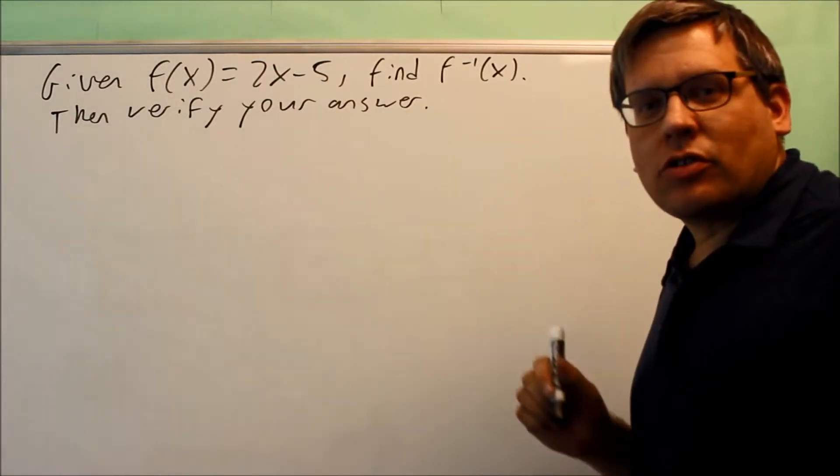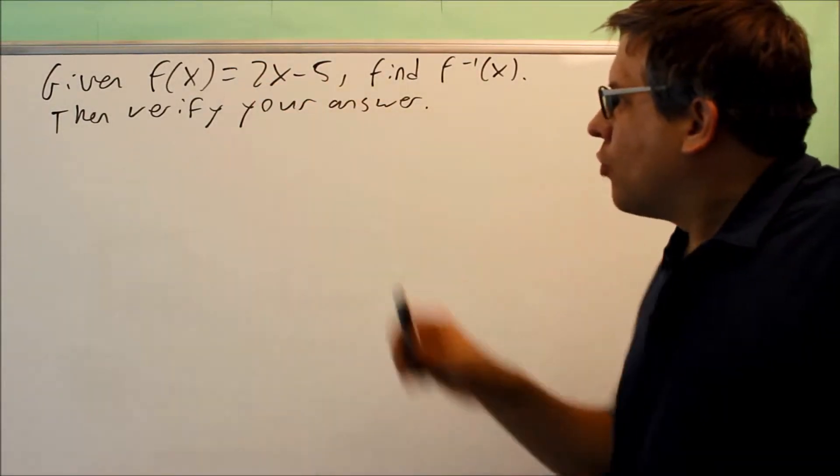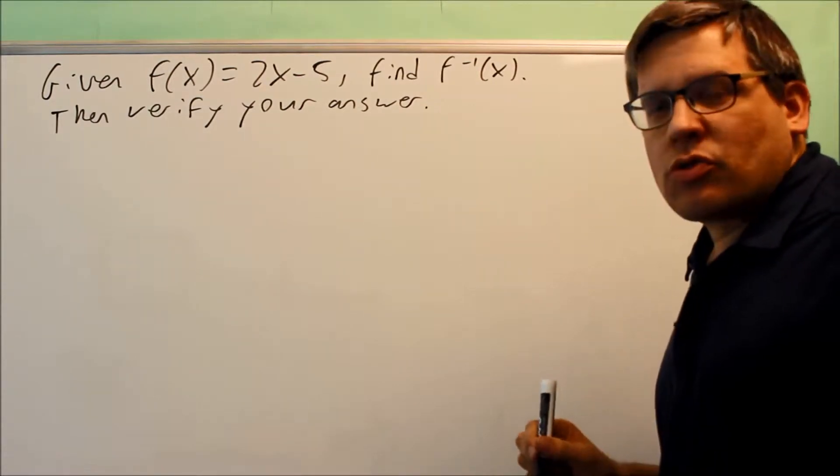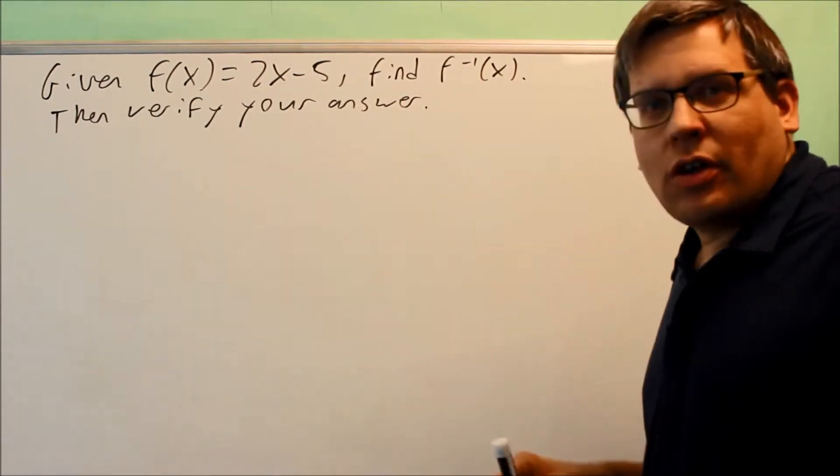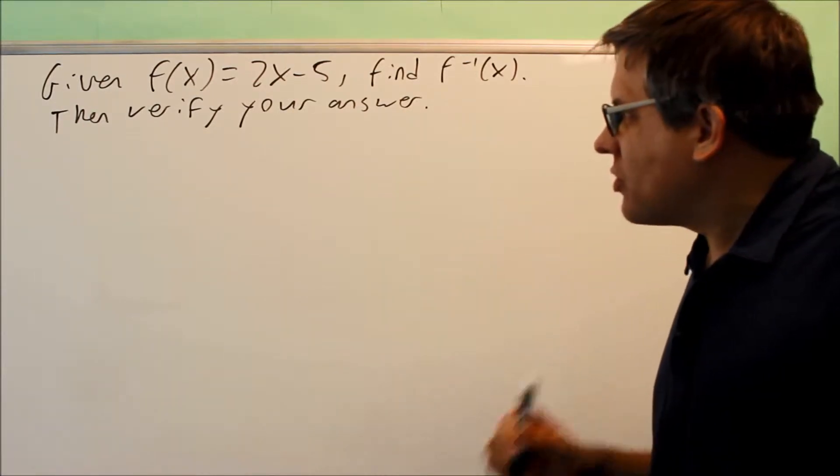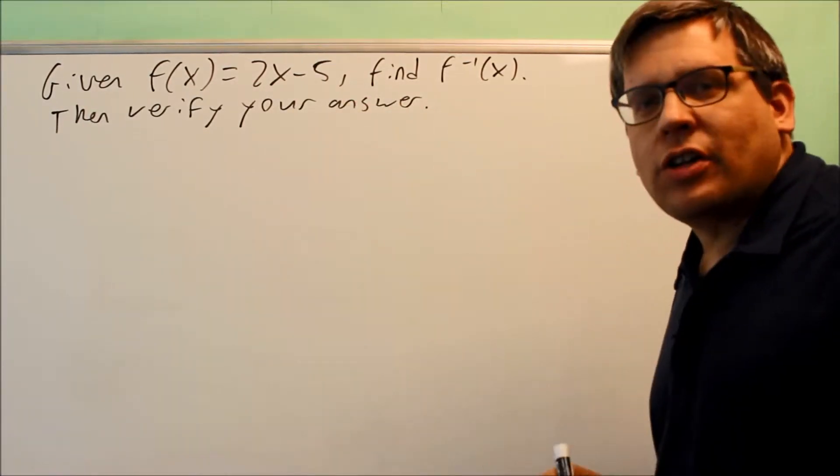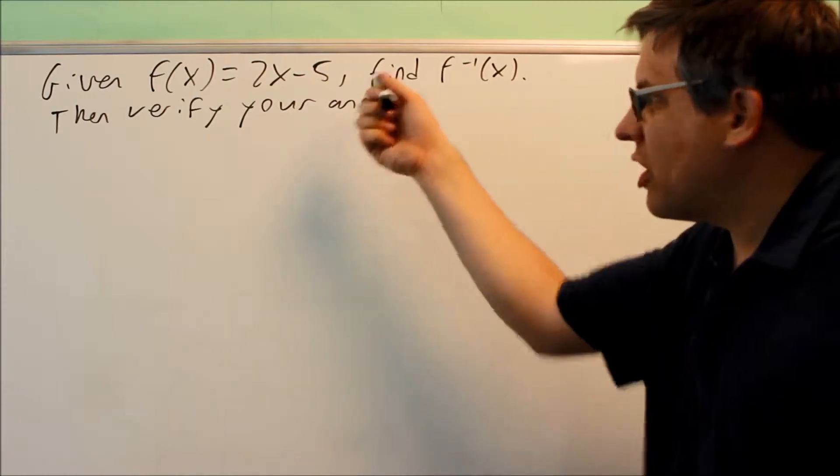Okay, now we want to find an inverse algebraically. What we're working with here is f of x equals 2x minus 5. Now, in the notes, I gave you a set of four different steps that you're going to go through in order to find the inverse, so let's go through all four of those steps with this example.